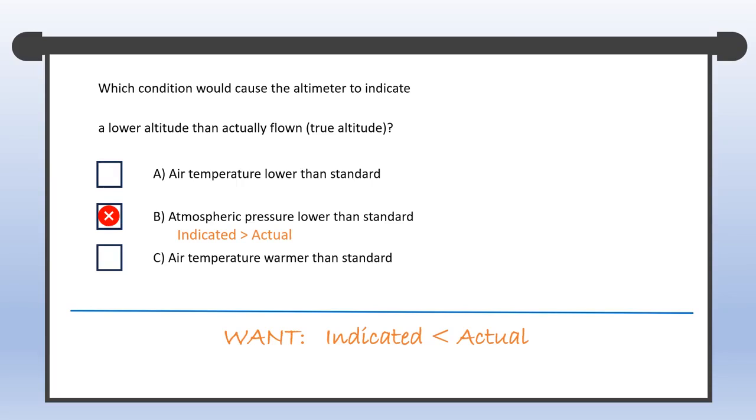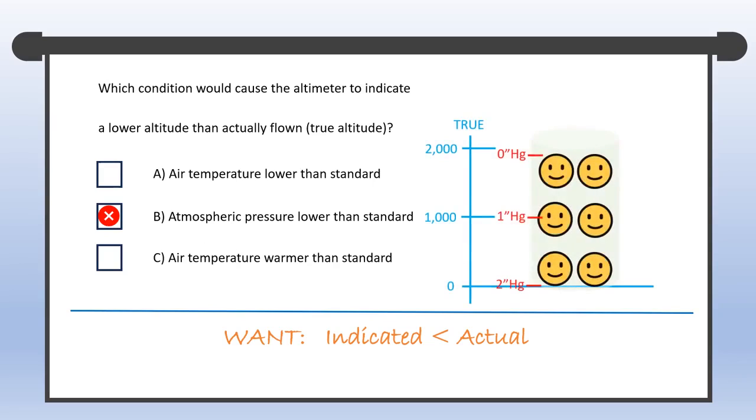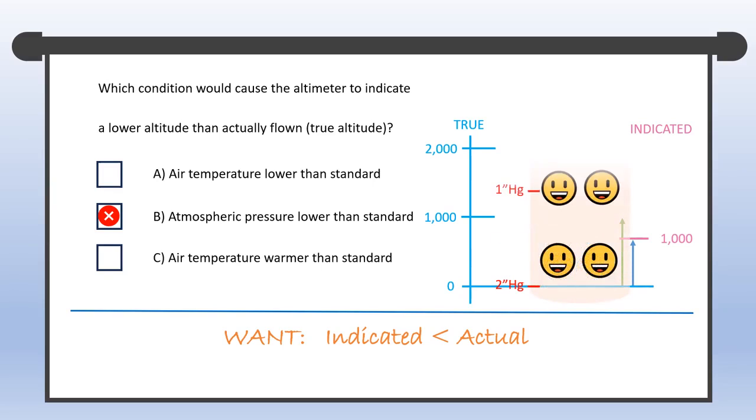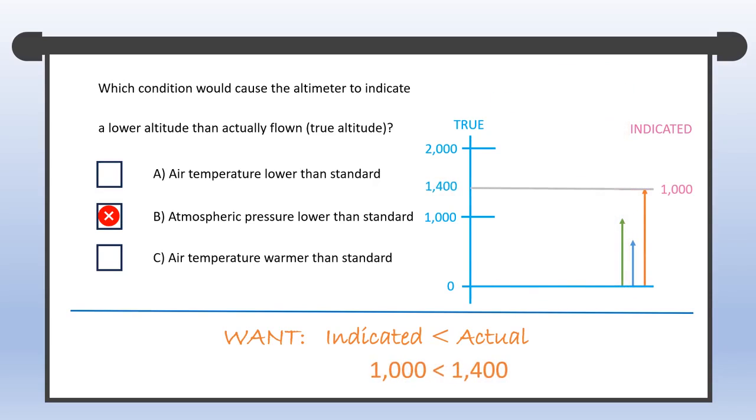Now, let's compare the indicated altitude to true altitude as air temperature changes. In standard conditions, indicated altitude equals true altitude. When air chills, density shoots up, but your altimeter, oblivious to density, sticks to 1000 feet, giving you less than 1000 feet of true altitude. On the flip side, warmer air means lower density. Yet your trusty Mr. Altimeter insists on that 1000 feet, landing you at a true altitude of 1400 feet. And voila, C is the answer.